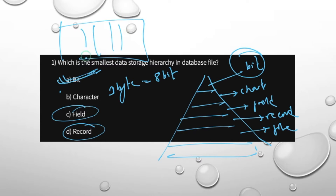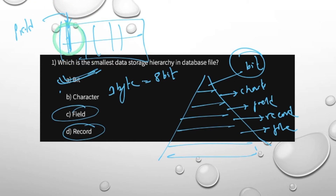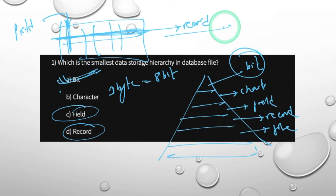The table is made of columns and rows. The column is a field, and the row is a record. The column of a database table is known as a field, and the row of a database table is known as a record.